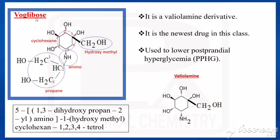That is the structure of voglibose. The parent is cyclohexene with four hydroxy groups; for four hydroxy groups the suffix is '-tetraol', giving cyclohexene-1,2,3,4-tetraol.